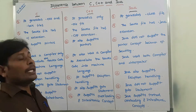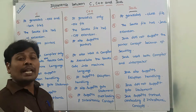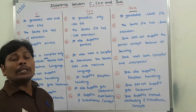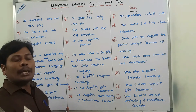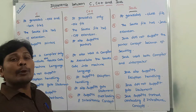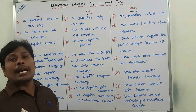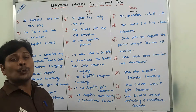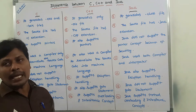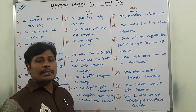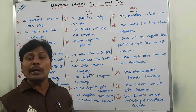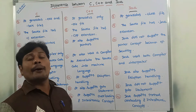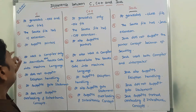C language generates two types of files: a .exe file (executable file) and a .bak file (backup file). C++ language generates only .exe files. But Java language generates only .class files.